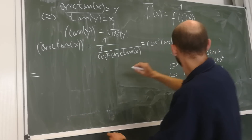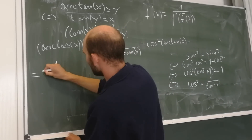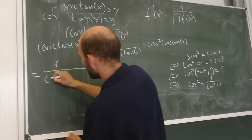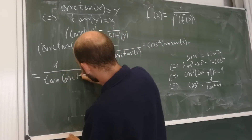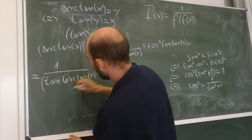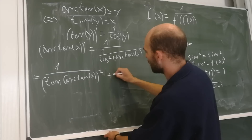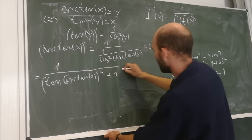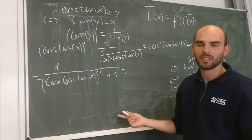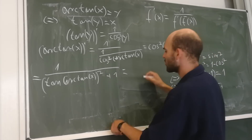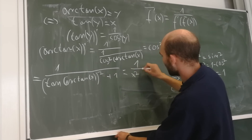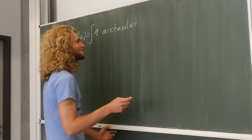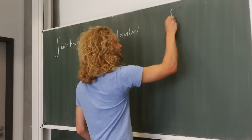Now let's take this formula and rewrite: cosine squared of arctan(x) equals 1 over (tangent of arctan(x))² plus 1. Since tangent of arctan(x) equals x, the derivative of arctan(x) is equal to 1 over (x squared plus 1).